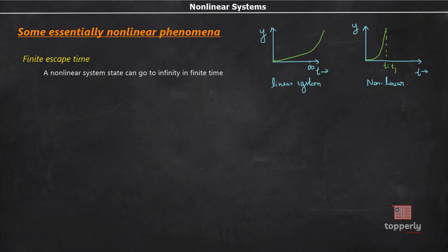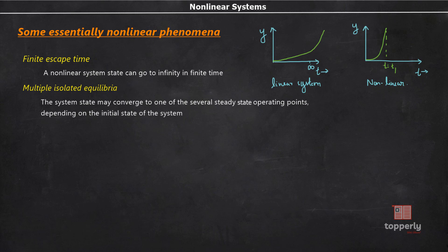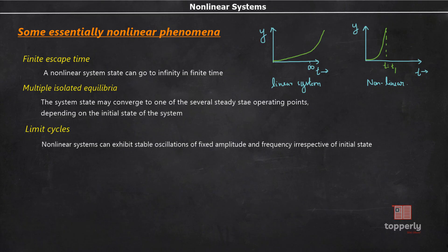Another essentially non-linear phenomenon is multiple isolated equilibria. A linear system can have only one isolated equilibrium point, and thus only one steady-state operating point that attracts the state of the system irrespective of the initial state. A non-linear system, on the other hand, can have more than one isolated equilibrium point — the system state may converge to one of several steady-state operating points depending on the initial state. The next phenomenon is limit cycles. For a linear time-invariant system to oscillate, it must have poles on the imaginary axis, and the amplitude of oscillation depends on the initial state. However, non-linear systems can exhibit stable oscillations of fixed amplitude and frequency irrespective of the initial state. This type of oscillation is called a limit cycle.